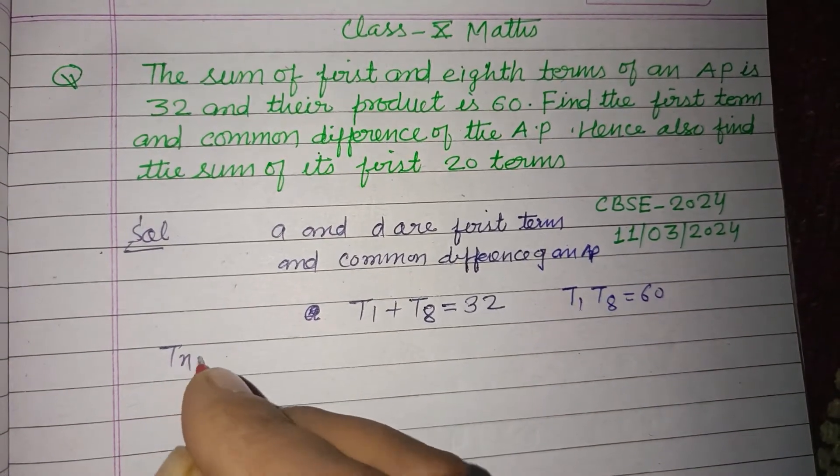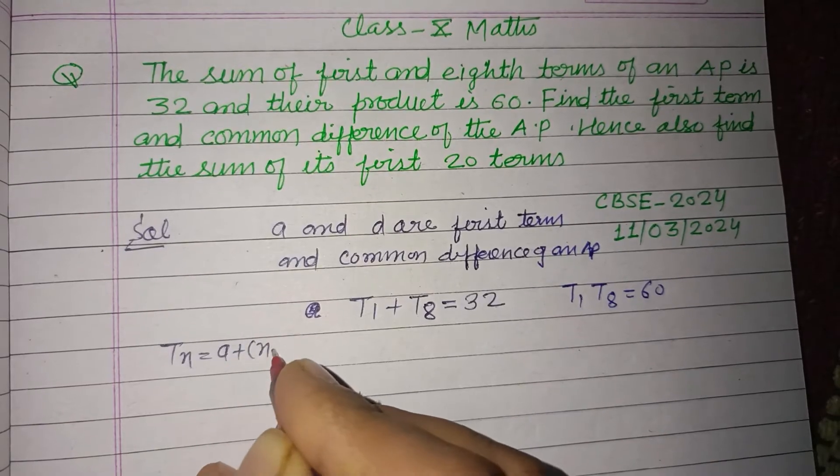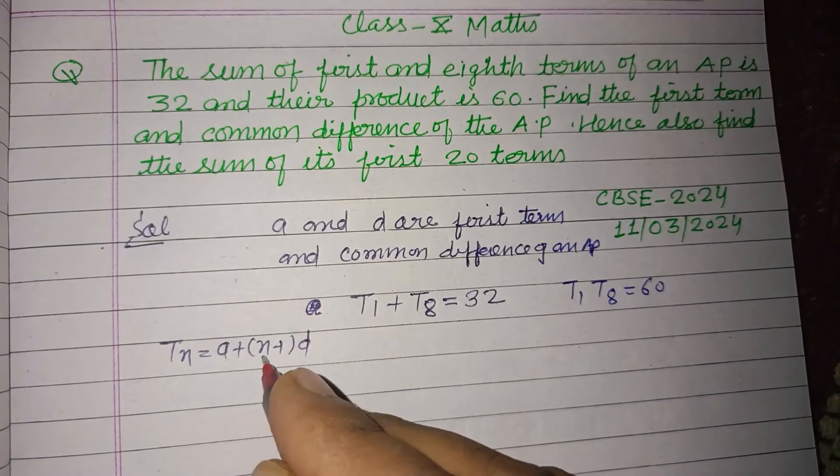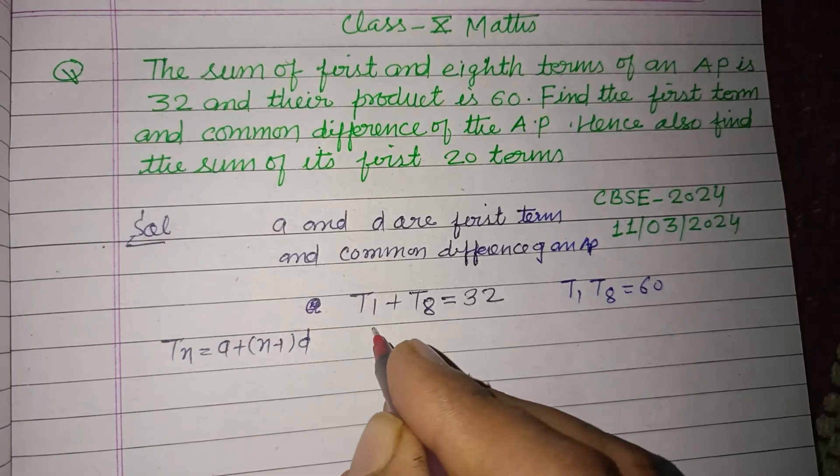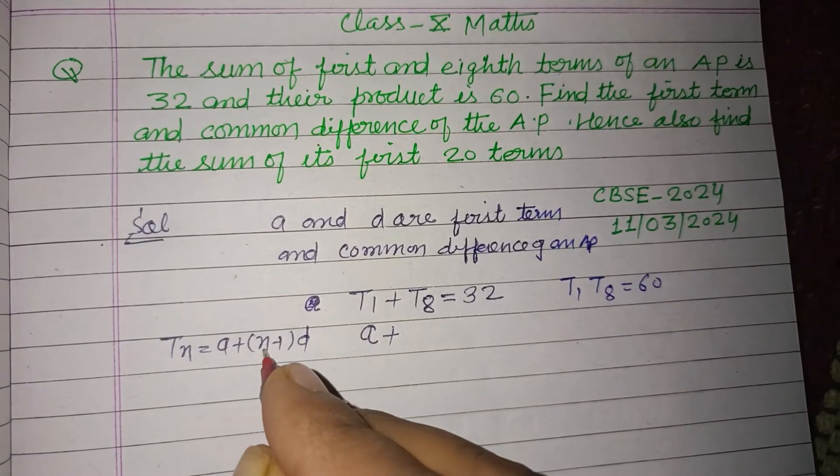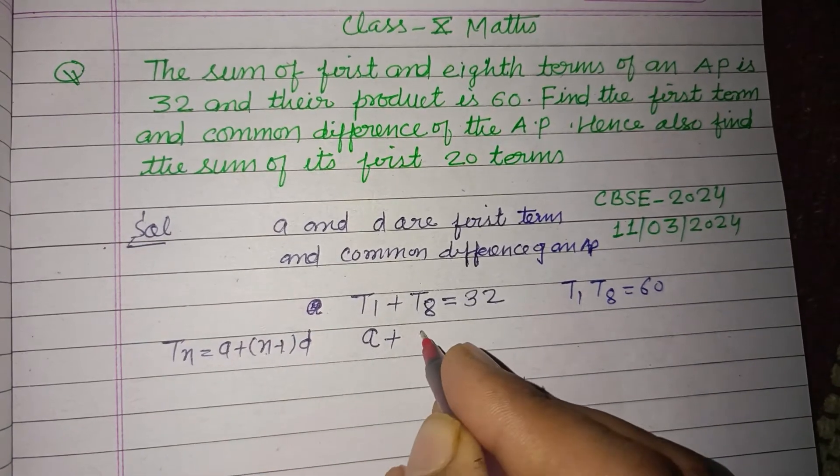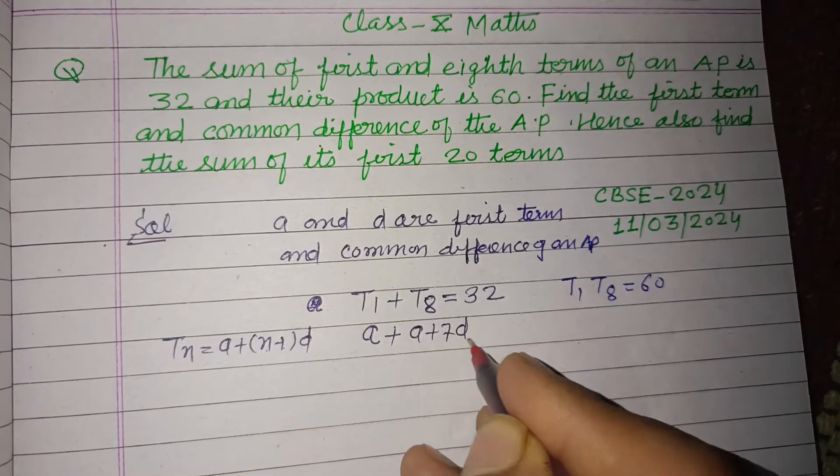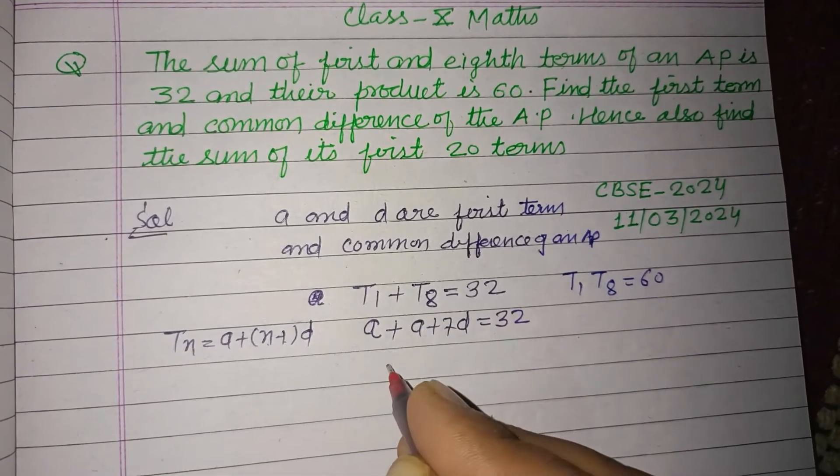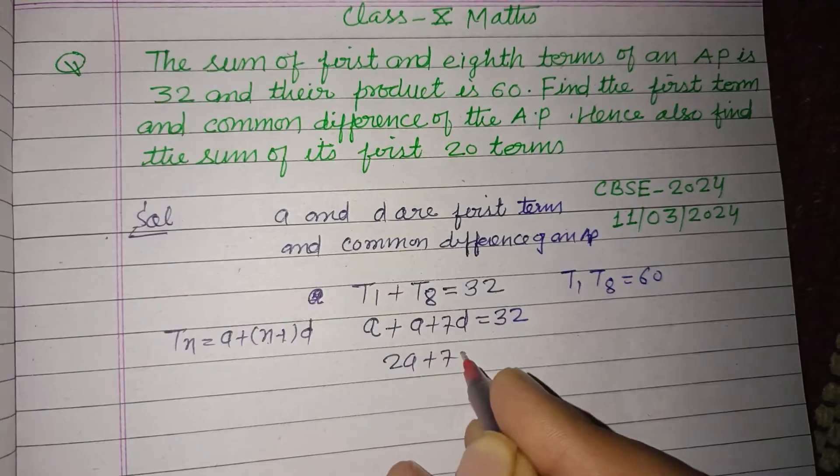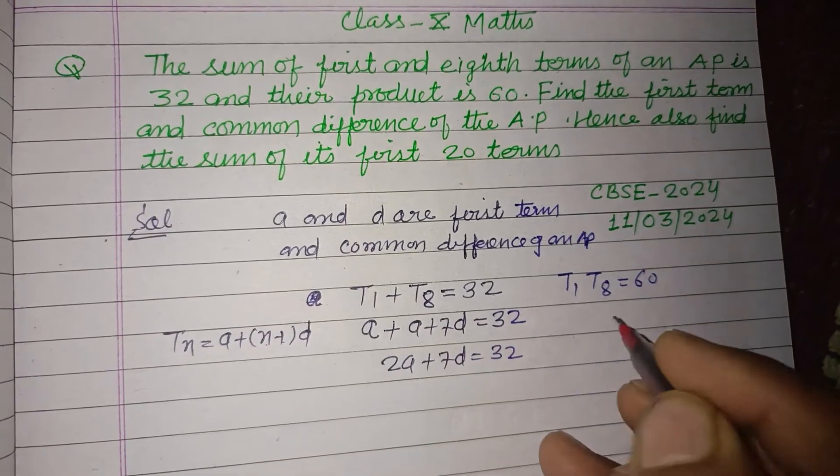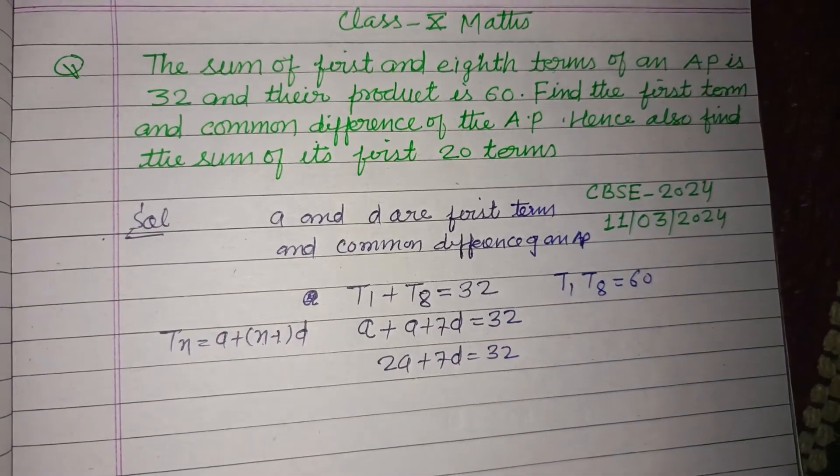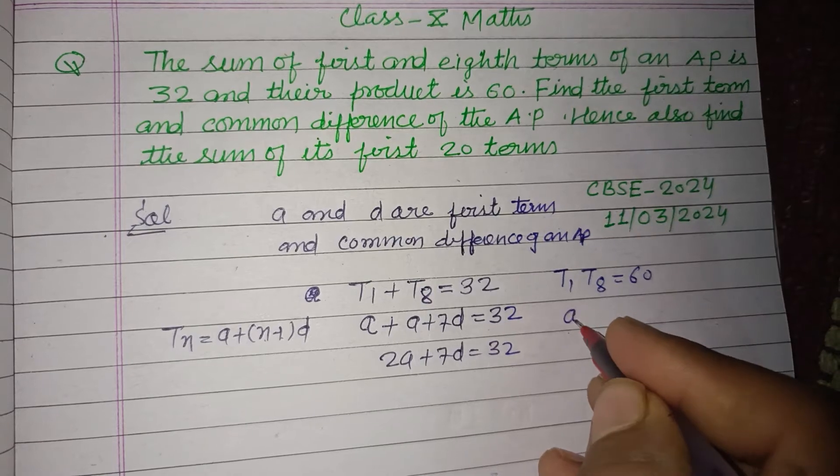You know that Tn equals a plus (n-1) times d. When we put 1 here we get only a, and when we put 8 here, 8 minus 1 is 7, so we get a plus 7d. This is 32, so 2a plus 7d equals 32.